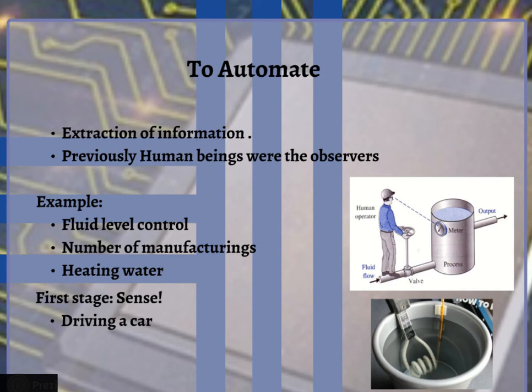So in order to automate a plant or process or system, we first require to extract information related to the variables precisely to be controlled. If we talk about practices in the past, most monitoring and controlling tasks involved humans as sensors and actuators. For example, if we talk about fluid level control — like in water tanks at home or reservoirs in industries — the fluids were required to be filled at a certain preset level, which in the past were monitored by humans.